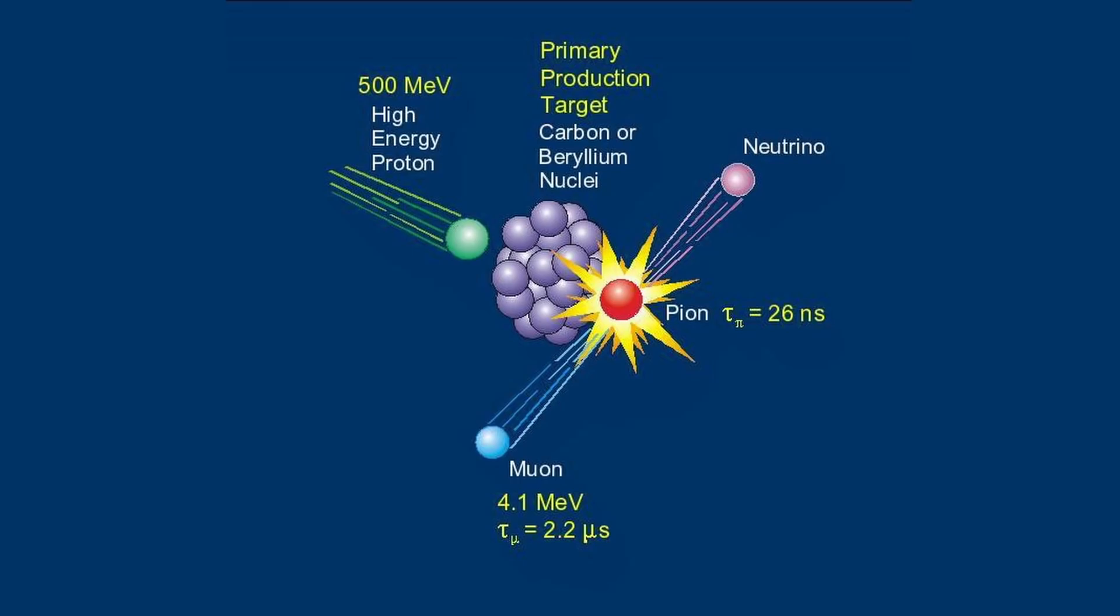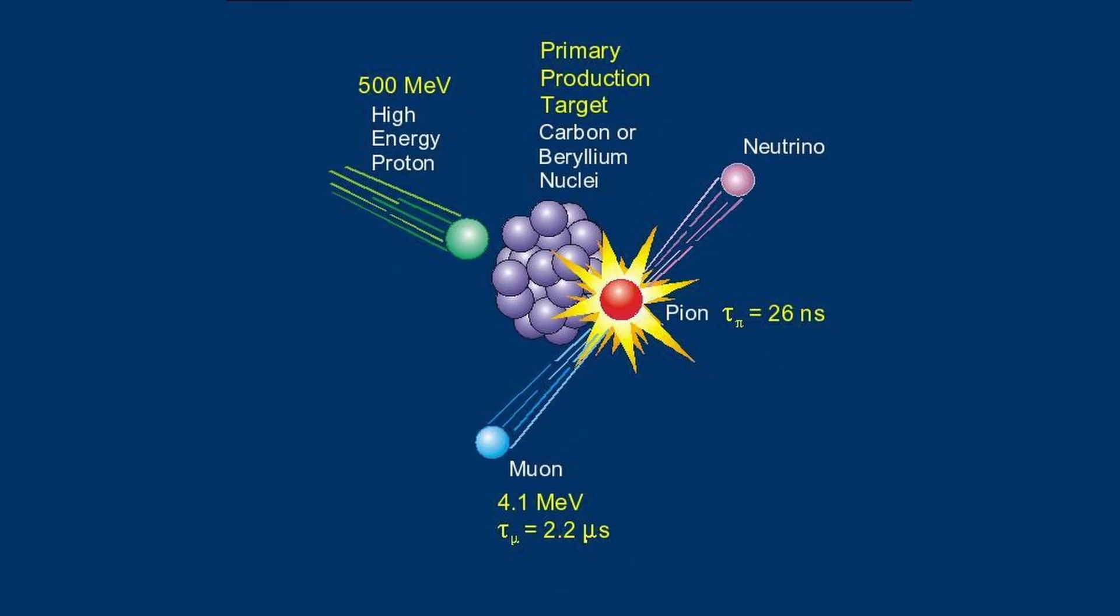We cannot see or measure pions. They are a theoretical particle. The same can be said for the neutrino. We can only detect the neutrinos by their interaction with other particles.